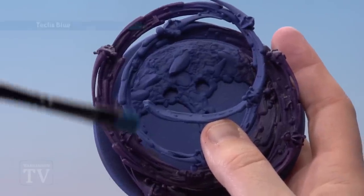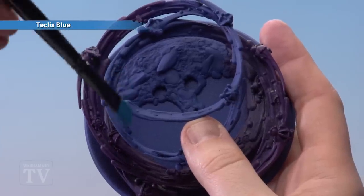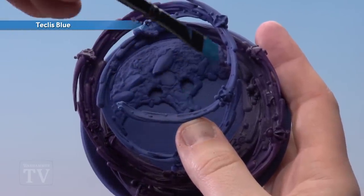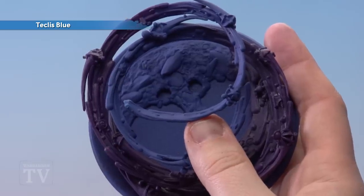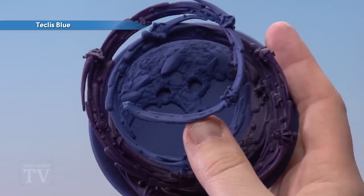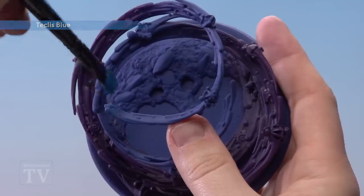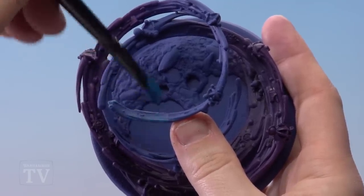So that stage is now done, we're going to start using Teclis Blue to highlight. Now I'm going to start a heavier dry brush here and as I go further down I'm going to get a bit lighter when I get close to the purple. You will notice there's a little top tip here, probably use your thumb just to brace the actual swirl itself so it doesn't go too mad and start flopping around. So just gently build up those layers of Teclis Blue.